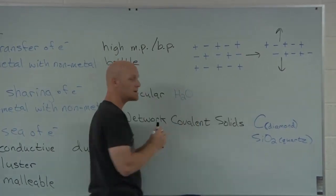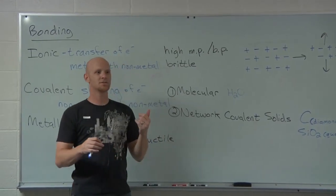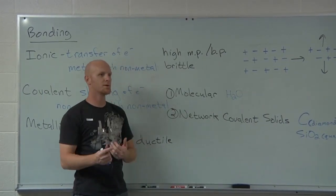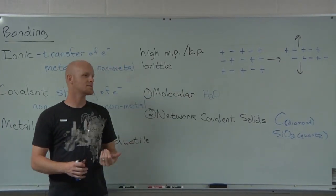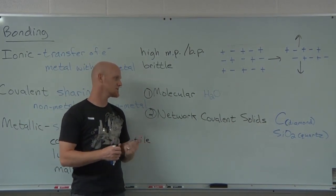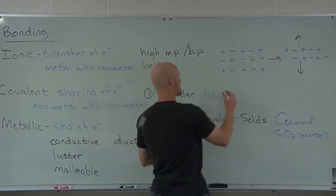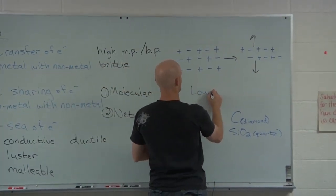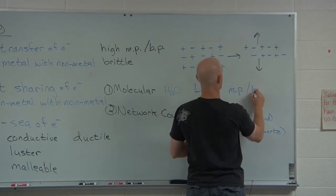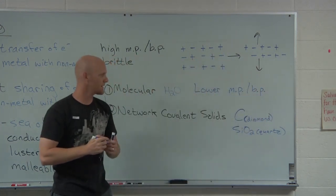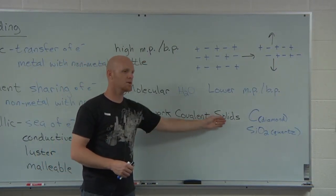But if I told you I have a water molecule — H₂O is a molecule, and I could have a water molecule. I probably have billions or a mole of water molecules, but it is a molecular compound. Non-metal with non-metal, and they'll exist as individual molecules, not big crystals at room temperature usually. Molecular compounds are typically associated with much lower melting points and boiling points — lower relative to ionic compounds or relative to network covalent solids.